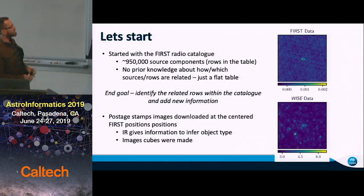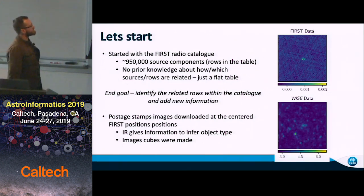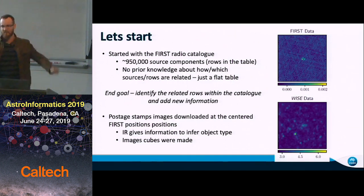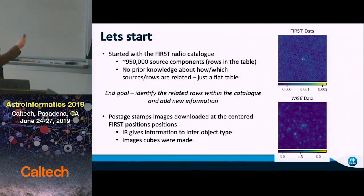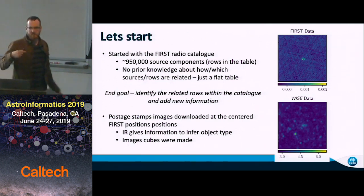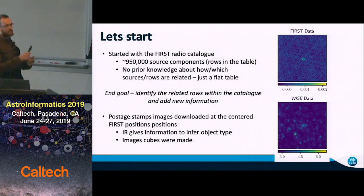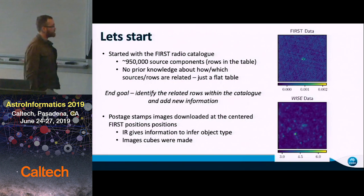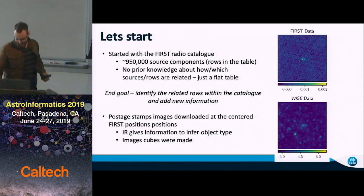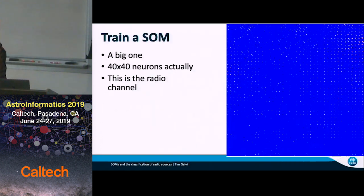I took the FIRST radio catalog — a survey conducted with the VLA — which described the positions of about 950,000 sources or source components. The name of the game was: how do we identify the rows in that catalog that are related to one another, and how can we go about identifying the potential host galaxy that produced the radio emission? I downloaded postage stamps from these positions from the FIRST and WISE catalog servers, and with a little bit of pre-processing, I made these image cubes and applied PINK to them.